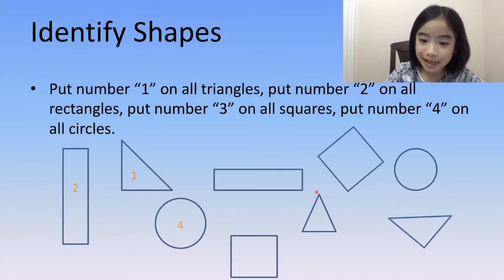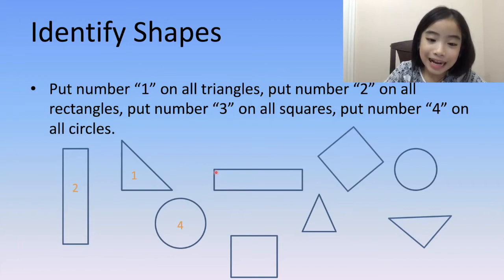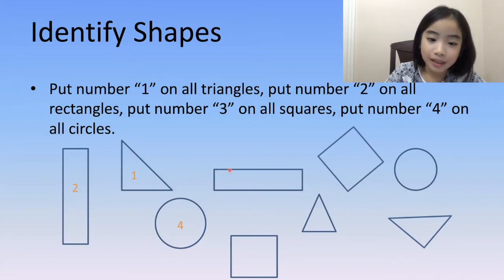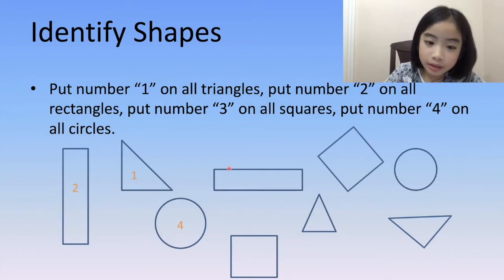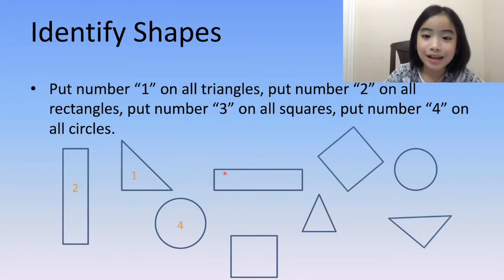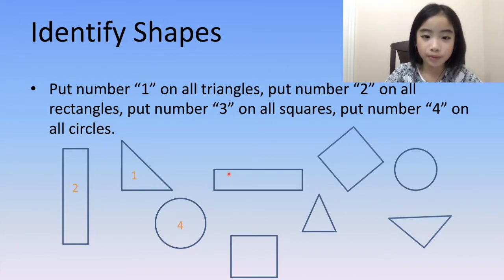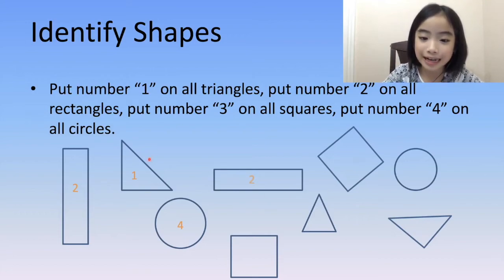Now, let's look at this shape over here. It has four sides and four corners, but these two sides are not equal. So, this is a rectangle. Let's put the number two on this rectangle.